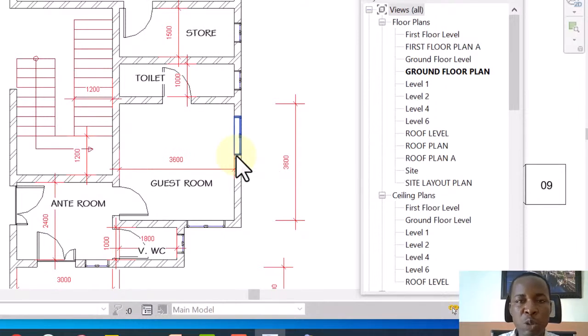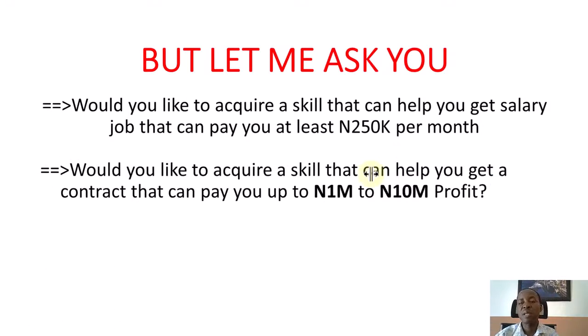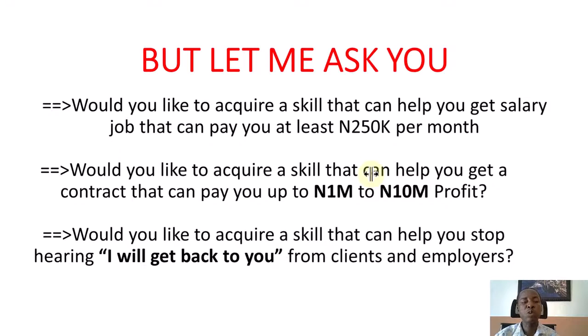There are so many other things we need to do that we cannot finish in this video alone. As a professional, one of the most important things you need is skill. You need to be very skillful at whatever you are doing — that is what is going to sell you to the world. Would you like to acquire a skill that can help you get a salary job paying at least 250,000 Naira per month? Would you like to acquire a skill that can help you get a contract paying 1 million to 10 million profit?